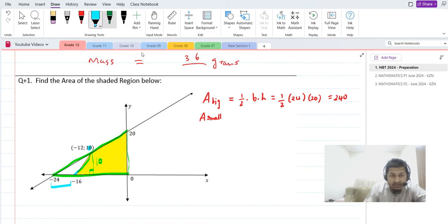So half the base is 8 because 24 minus 16 is 8, and the height is 10. We can say that is equal to 4 times 10 which is 40, because half of it is 4. And if you subtract both, you should get area which is equal to 200 units squared.